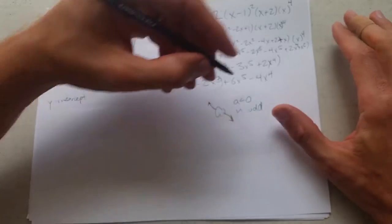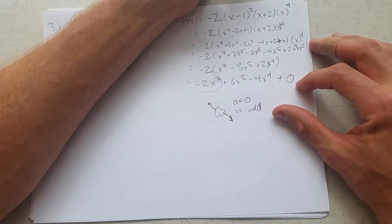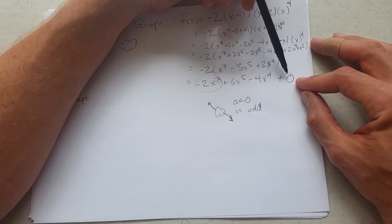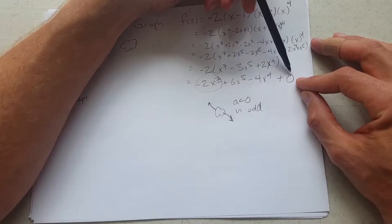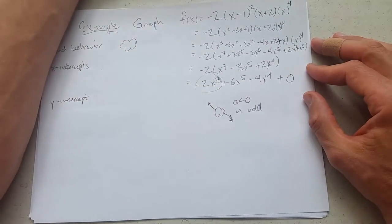There is one more nice thing about expanded form. It tells you your y-intercept pretty easily. I'm going to write a plus 0. There's no constant term. The constant term is the y-intercept. So the only great thing about expanded form so far is you get the y-intercept and the end behavior very easily.